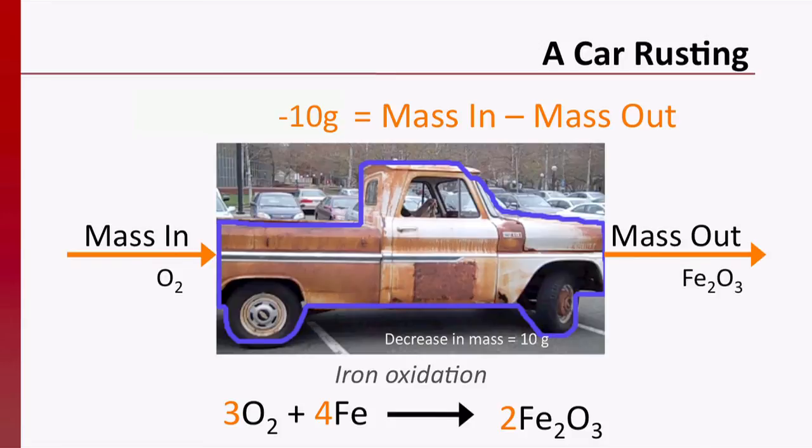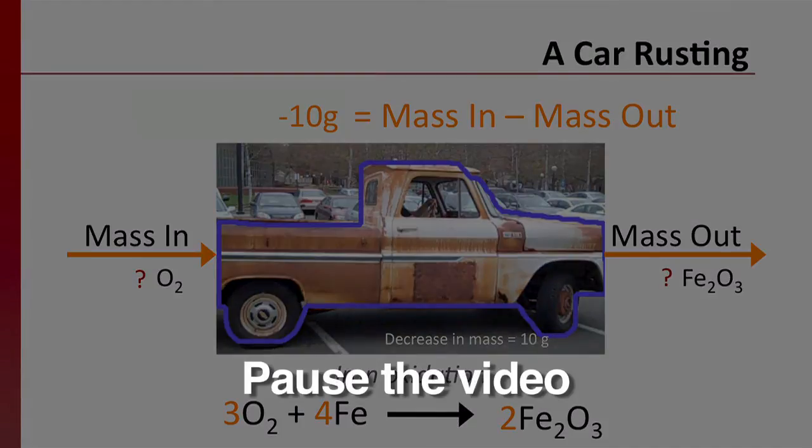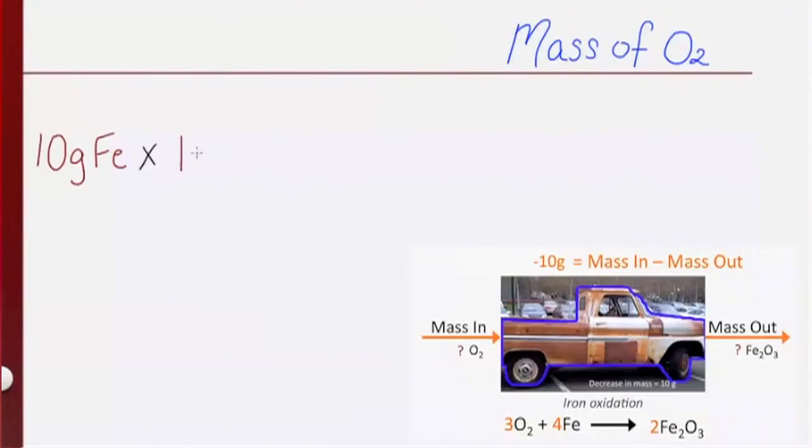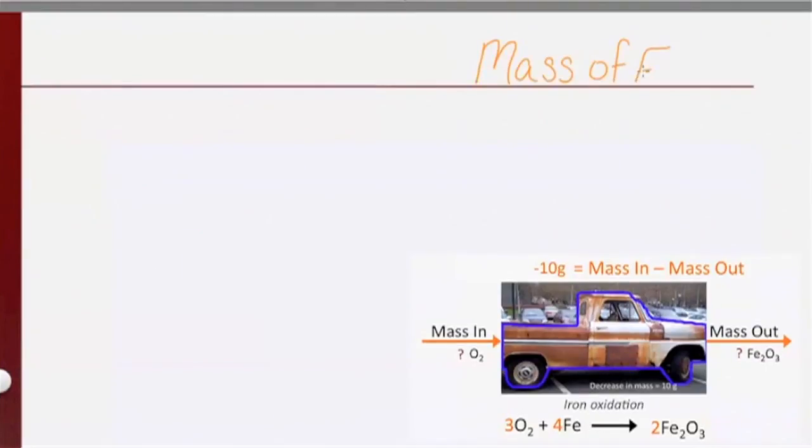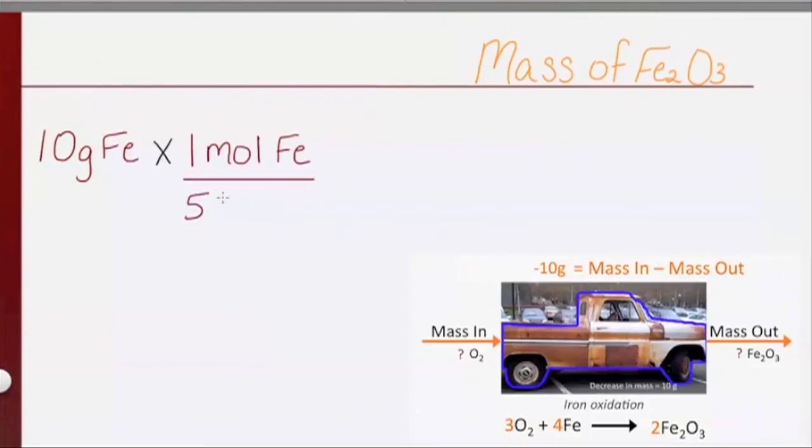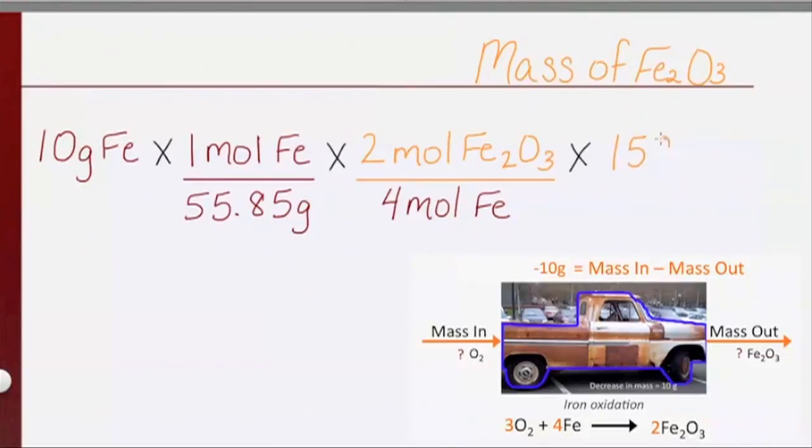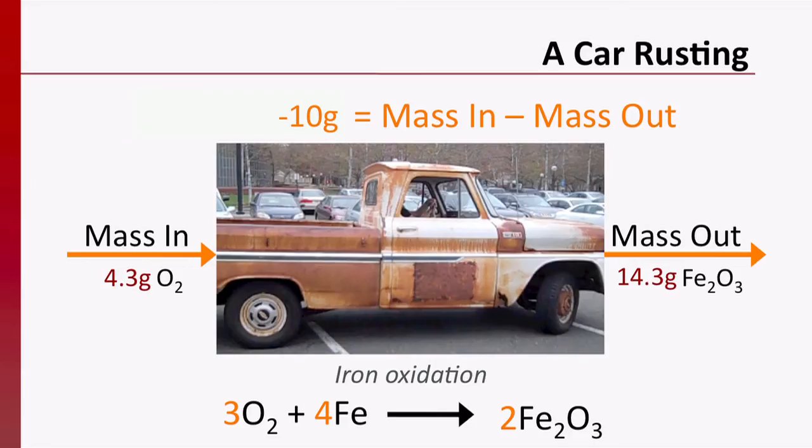Now, please pause the video here and see if you can figure out how much oxygen entered the system and how much iron oxide exited the system. Please continue playing the video to see the worked solutions. Using basic stoichiometry, we can see that 4.3 grams of oxygen entered the system and 14.3 grams of iron oxide exited the system.